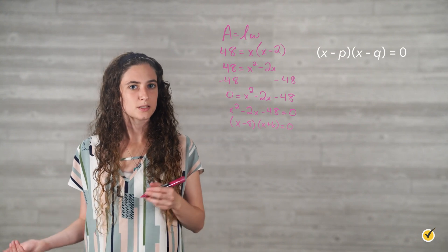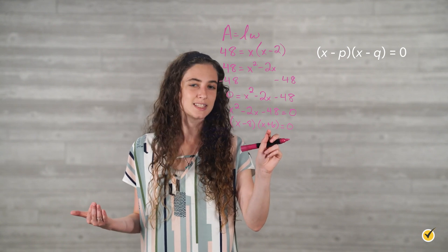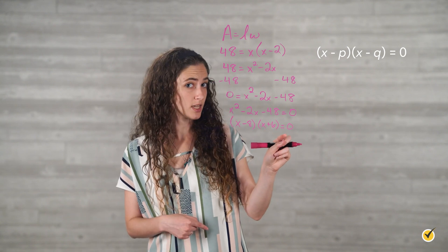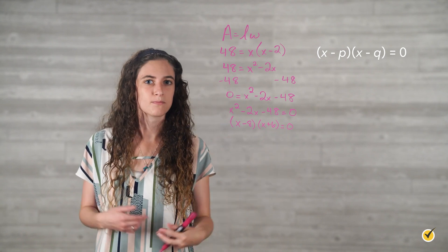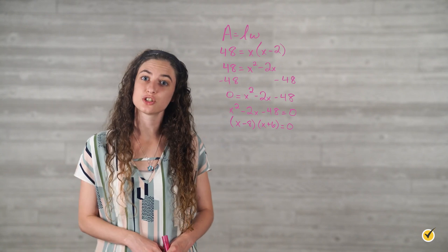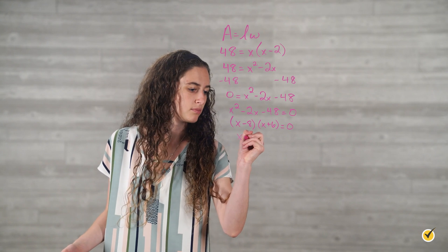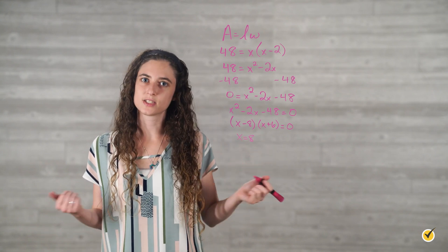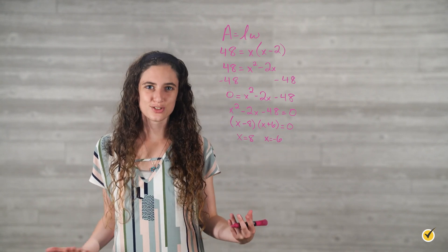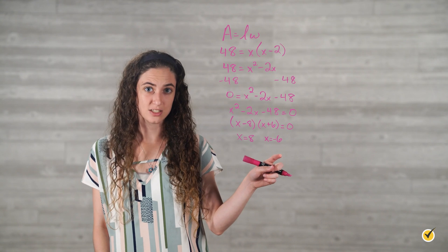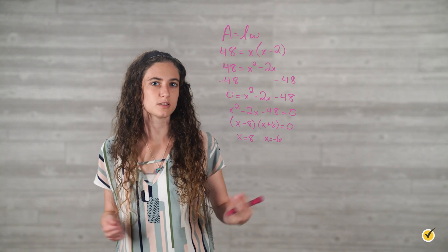Note that x plus 6 is the same as x minus negative 6. Substituting values, since 8 minus 8 equals 0, x equals 8; and since negative 6 plus 6 equals 0, x also equals negative 6. The solutions for x are 8 and negative 6, so the coordinates for the x-intercepts are 8, 0 and negative 6, 0.